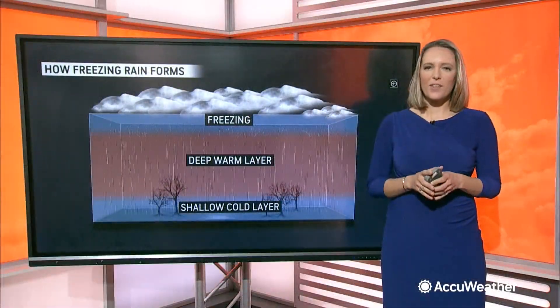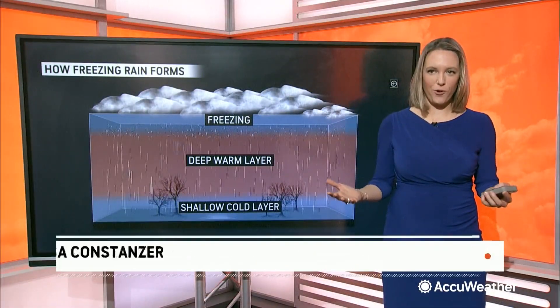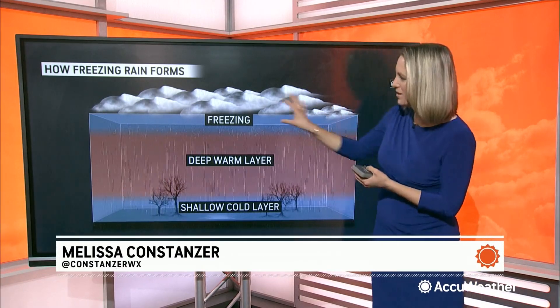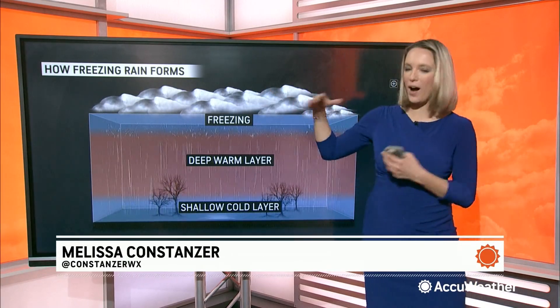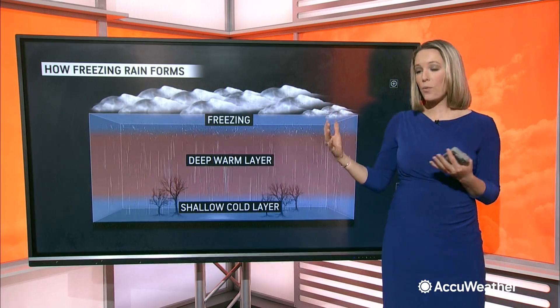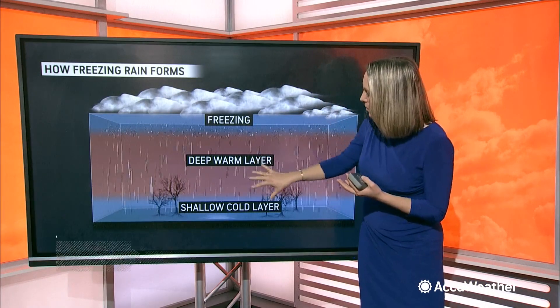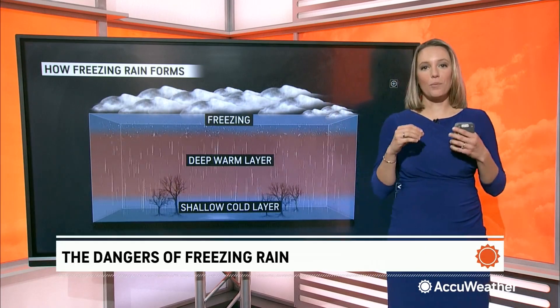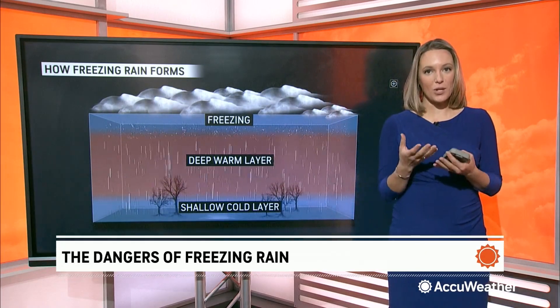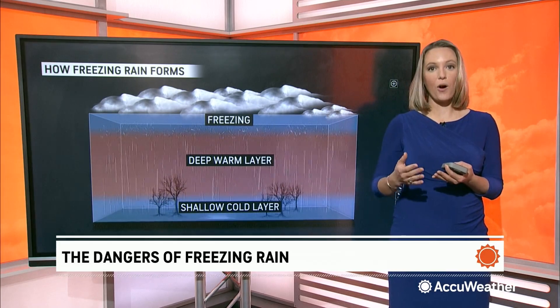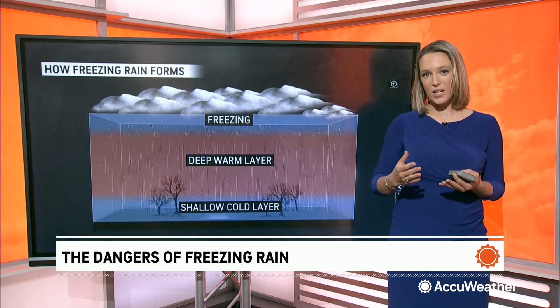So how does it form? First off, we usually have at least some sort of cold air, enough to at least start with snow high up in the atmosphere where the precipitation is forming. Either way, it hits into this deeper warm layer where the snow completely melts into a raindrop, and from there it continues to fall as rain.